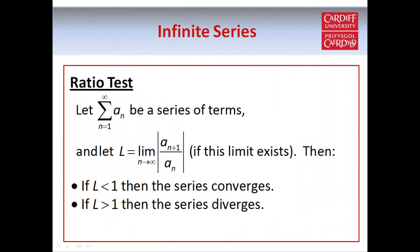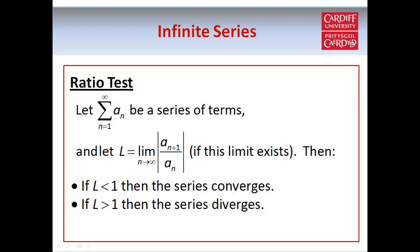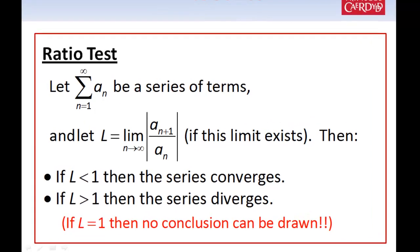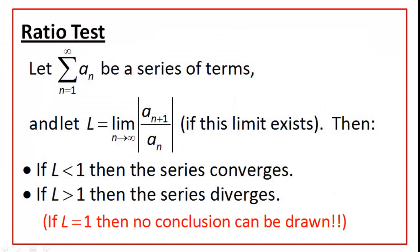The next test we're going to look at is called the ratio test. Suppose we have any series of terms denoted by a_n. To apply this test we examine the modulus of the ratio of a_{n+1} to a_n, and then we take the limit of that as n tends to infinity, and we call this limit L. If this limit is smaller than 1, the series is convergent. If the limit is greater than 1, the series is divergent. And the important point is that if L equals 1, we can't draw any conclusions at all — the series might be convergent or it might be divergent, so you just have to try an alternative test.